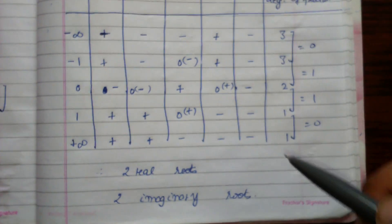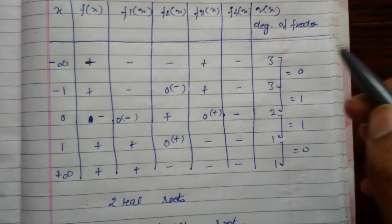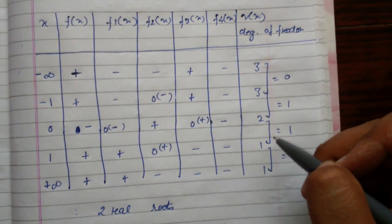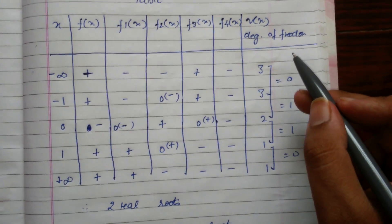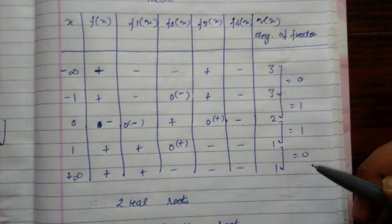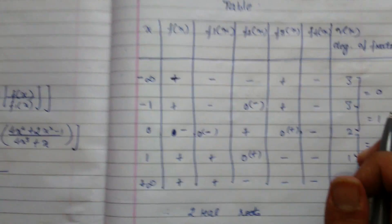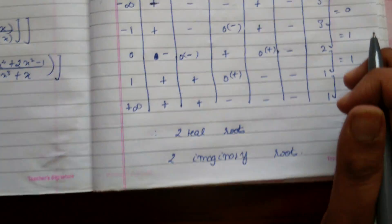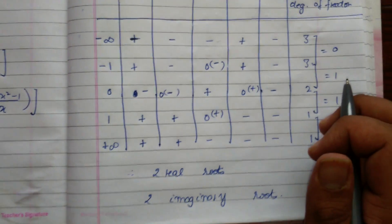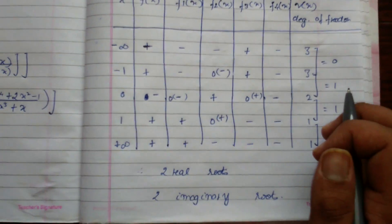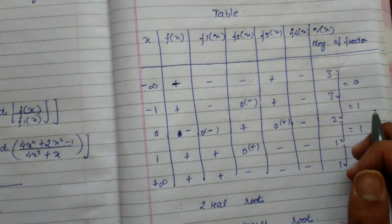We compute V(x) for all columns, then subtract consecutive V values: V(minus infinity) - V(-1) = 0, V(-1) - V(0) = 1, V(0) - V(1) = 1, V(1) - V(plus infinity) = 0. Adding these up: 0 + 1 + 1 + 0 = 2, so there are 2 real roots. Since f(x) has degree 4 there are 4 roots total, and 4 - 2 = 2 imaginary roots. Thank you for watching.